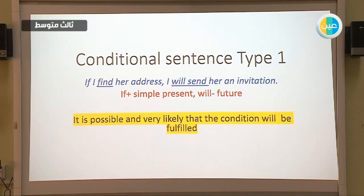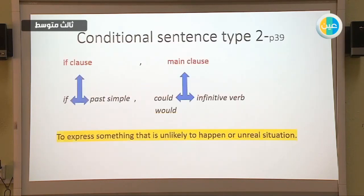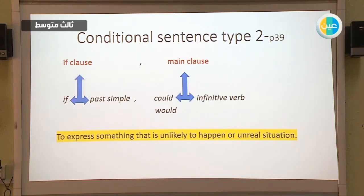Our lesson today is going to talk about the conditional sentence type 2, which is on page 39. To form conditional sentence type 2, we use in the 'if' clause: 'if' plus past simple verb. In the main clause, we use 'could' or 'would' plus the infinitive verb. We use it to express something that is unlikely to happen, or an unreal or imaginary situation.